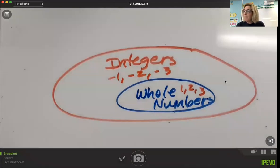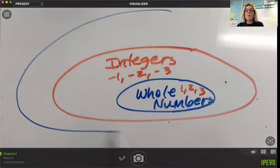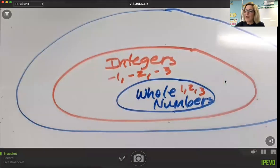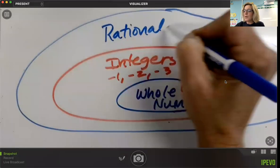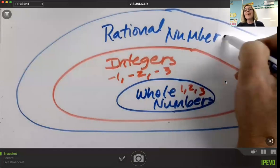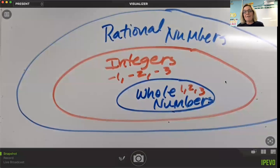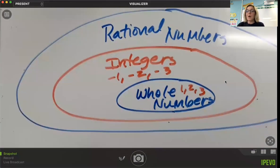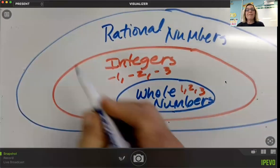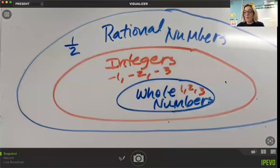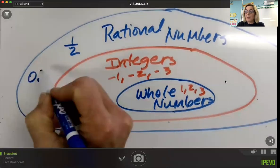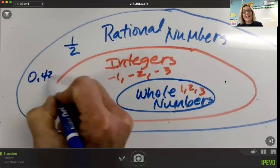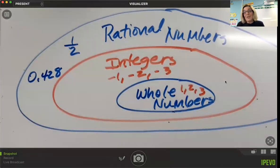When we start to think about parts, then we have a larger group of numbers called rational numbers. Rational numbers, by definition, include any numbers that can be written in fraction form. So let's think about what that means. One half is a fraction, very clearly in fraction form. So is 0.428. We read that 428 thousandths, which is a fraction, but we have a decimal form for that.